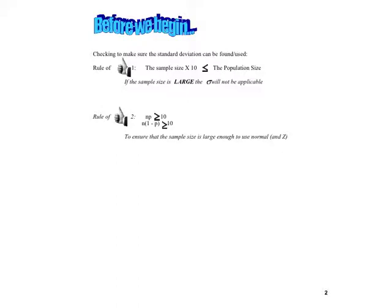Rule of thumb 1 is that the sample size times n is less than or equal to the population size. The reason it's not on the AP exam is we're never really going to know what exactly the population size is.